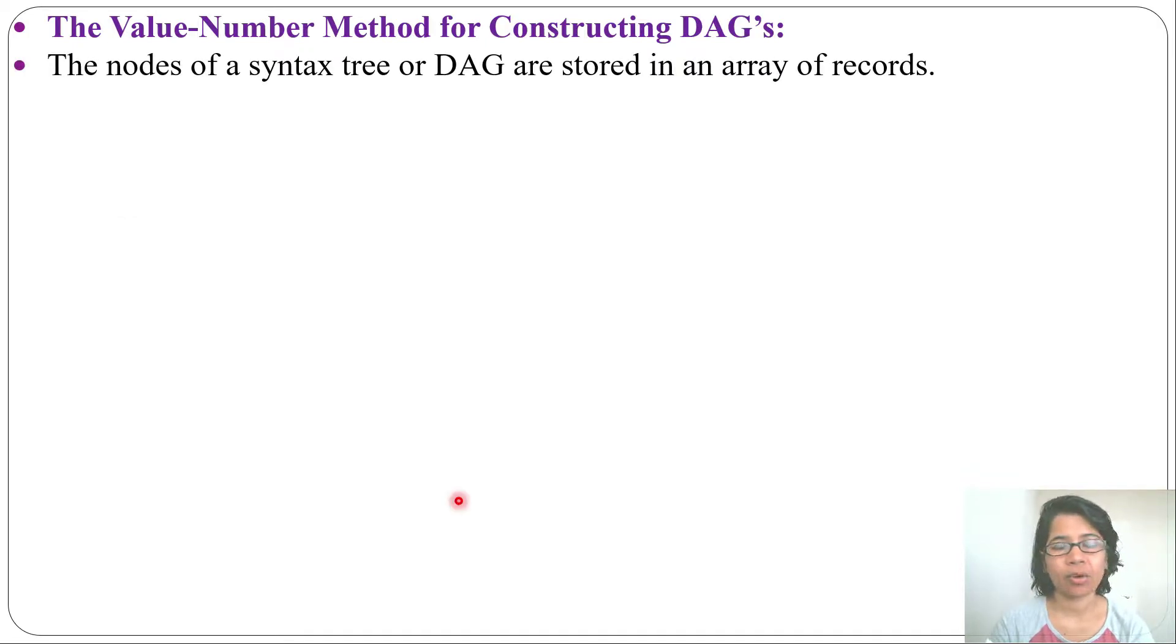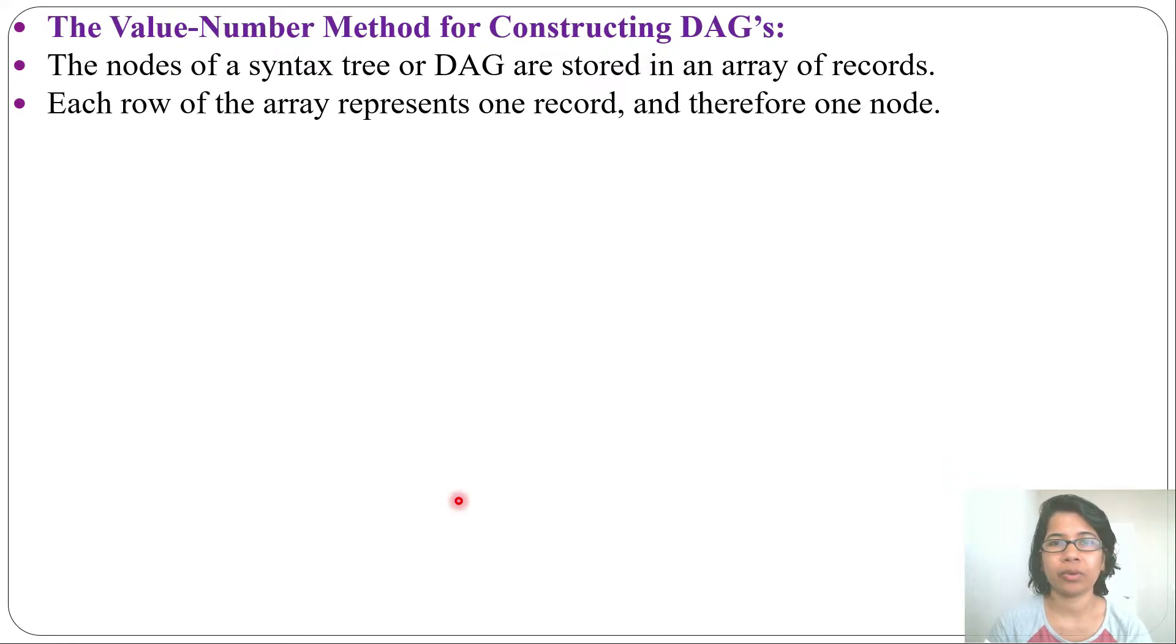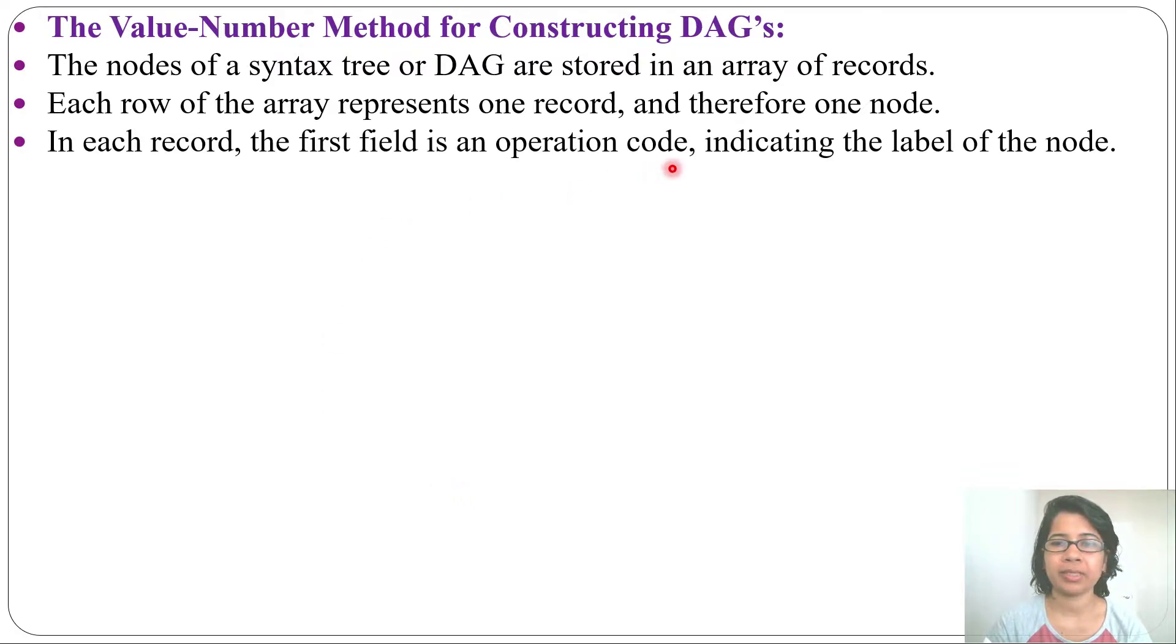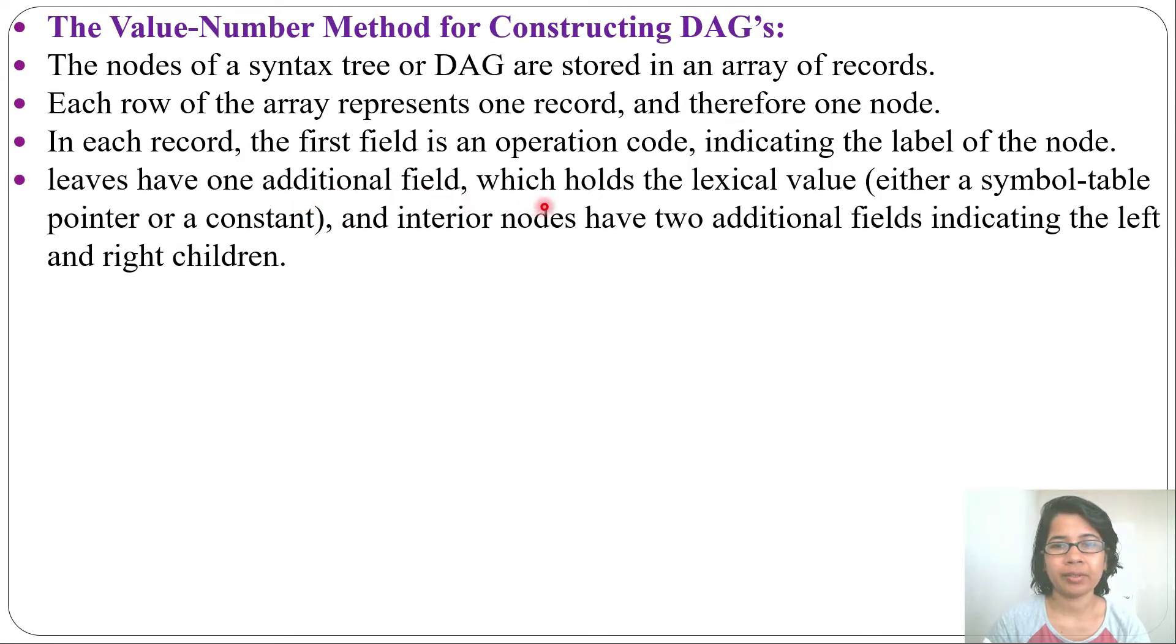The nodes of the syntax tree or DAG are stored in an array of records, and each row of the array represents one record or one node. In each record, the first field is the operation field indicating the label of the node. Leaves have one additional field which holds the lexical value, either the symbol table pointer or a constant, and interior nodes have two additional fields indicating the left and right children.